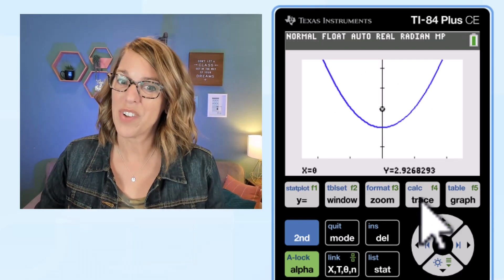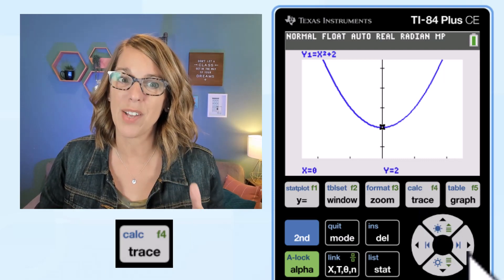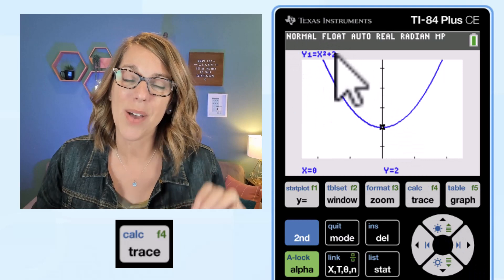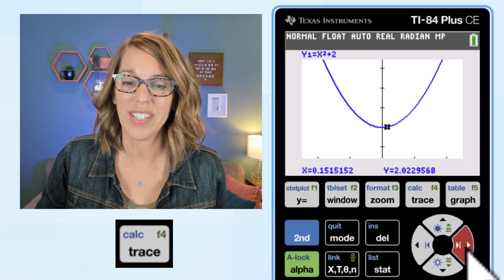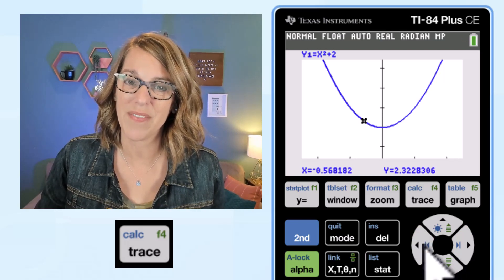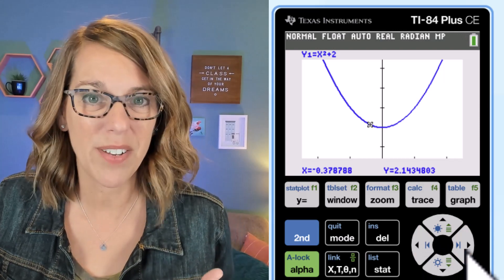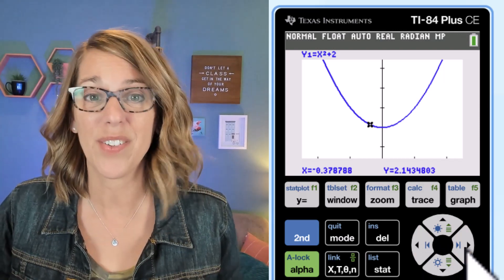I also have this trace button. If I hit the trace button it puts the cursor directly on my function. Take a look at this upper left hand corner. It's got the function name right there and I can arrow left and right to trace along the graph. Now I don't think that trace is the best way to find values on your graph but you can use a value function.